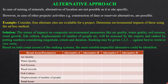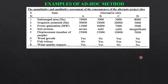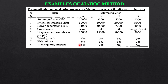This is an example of the ranking table. The broad area parameters are listed, and there are four alternatives. A score is assigned based on the severity or insignificance of the environmental effect. For example, the broad area parameters include submerged area, irrigation potential in hectares, power generation, and soil erosion, with values given for all alternative sites. For parameters 1, 2, 3, and 5, there is quantitative assessment; for parameters 4, 6, 7, and 8, the assessment is qualitative.